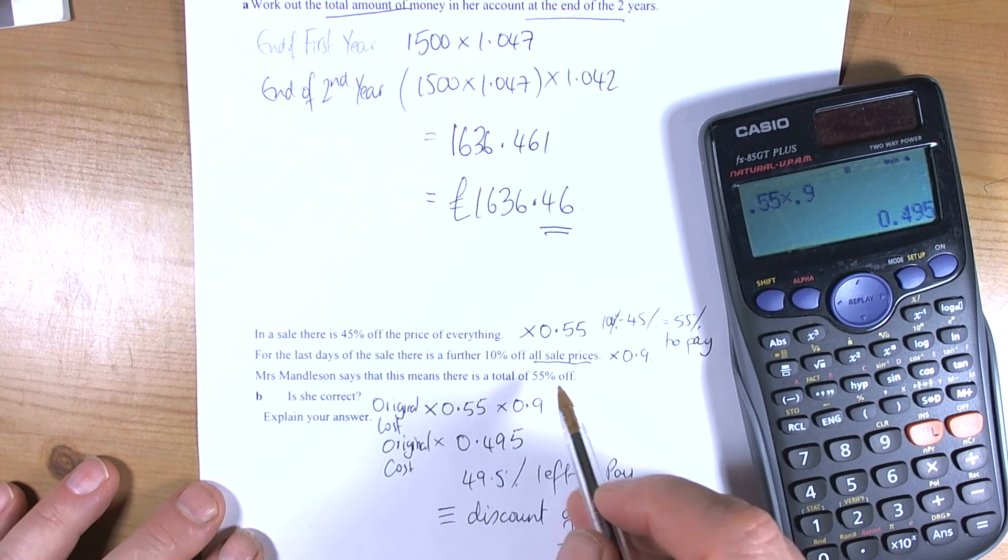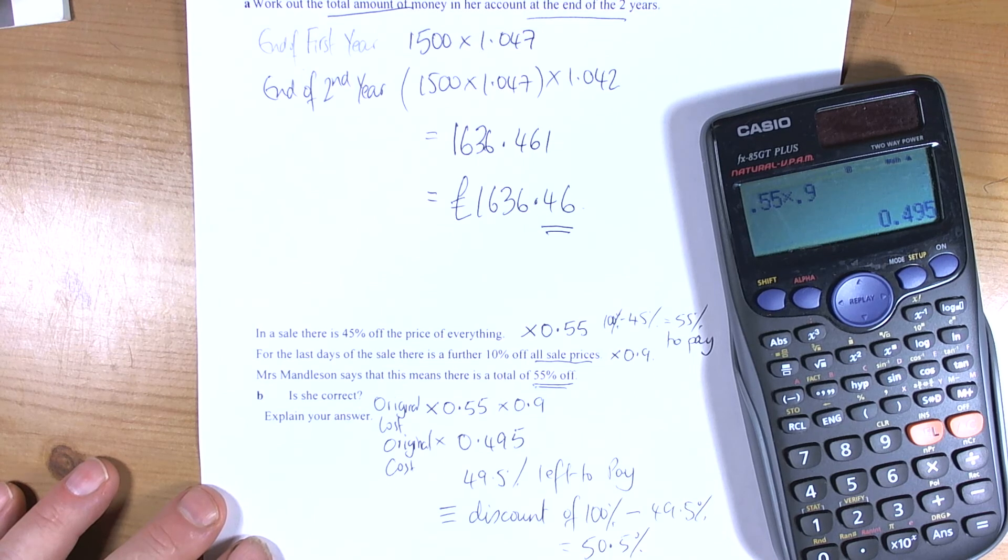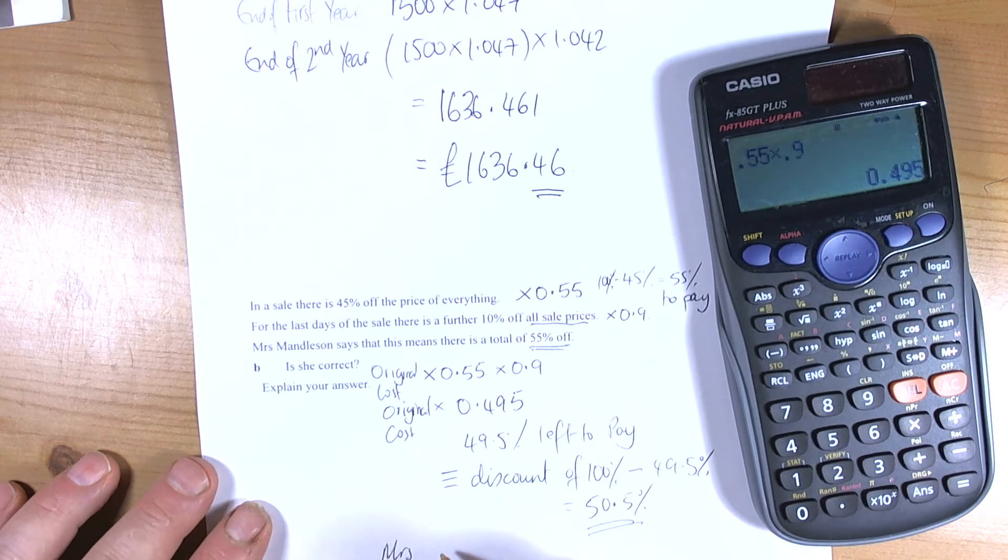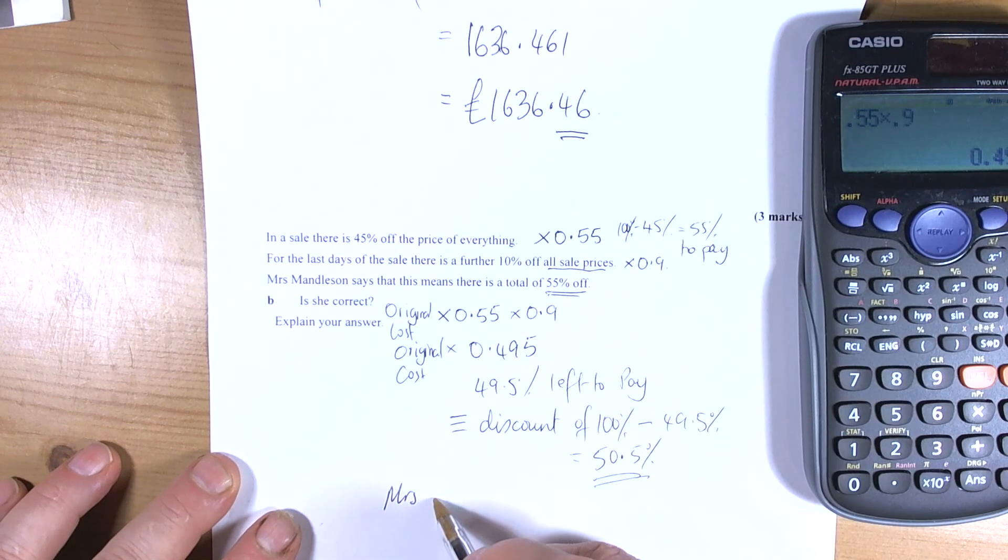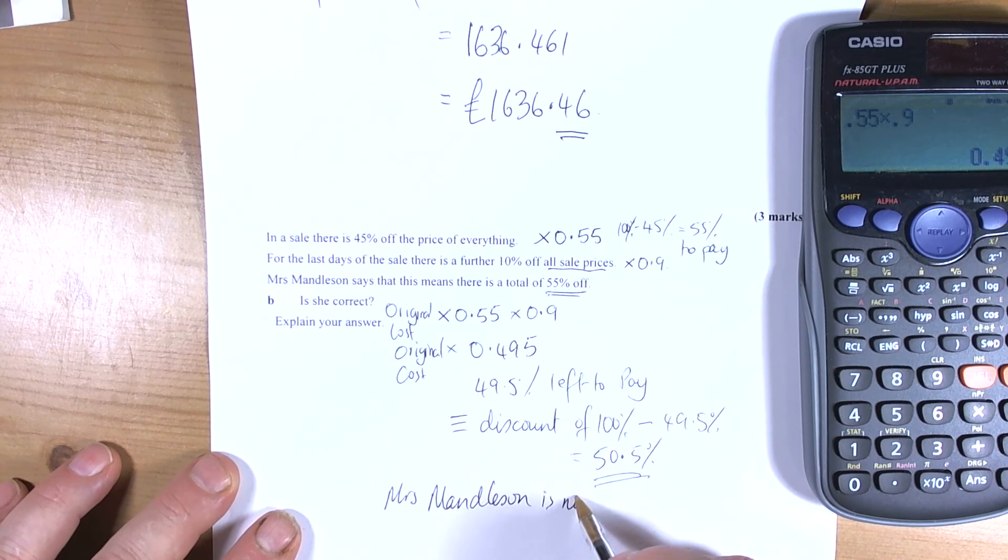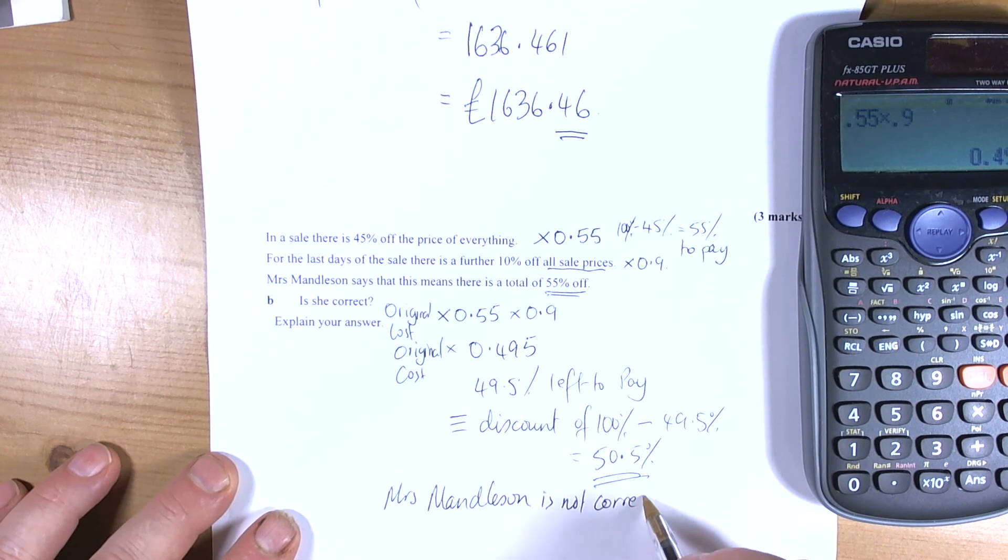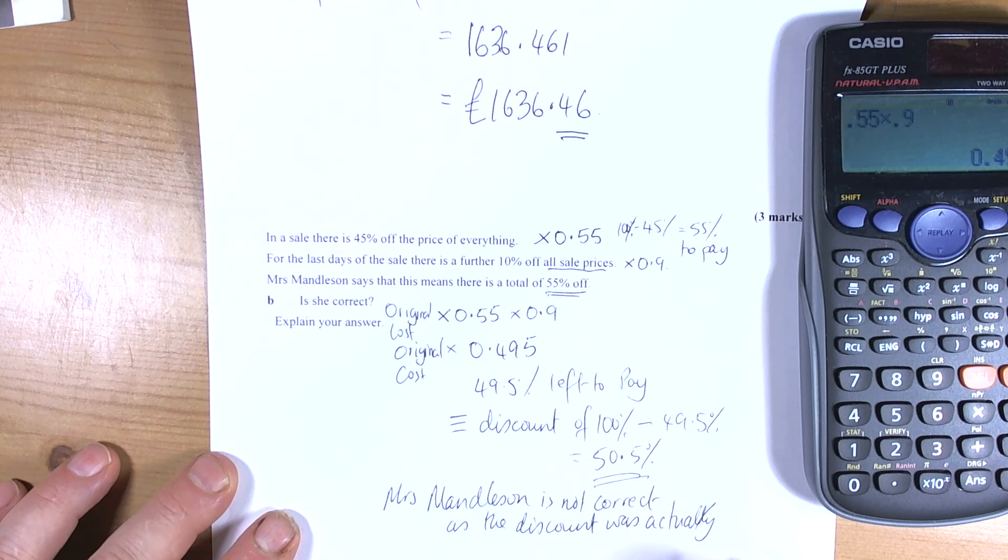Mrs Mandelson says this means there's a total of 55% off. So we finish off by saying, is she correct? So basically we need to finish off then with Mrs Mandelson is not correct, as the discount was actually 50.5%.